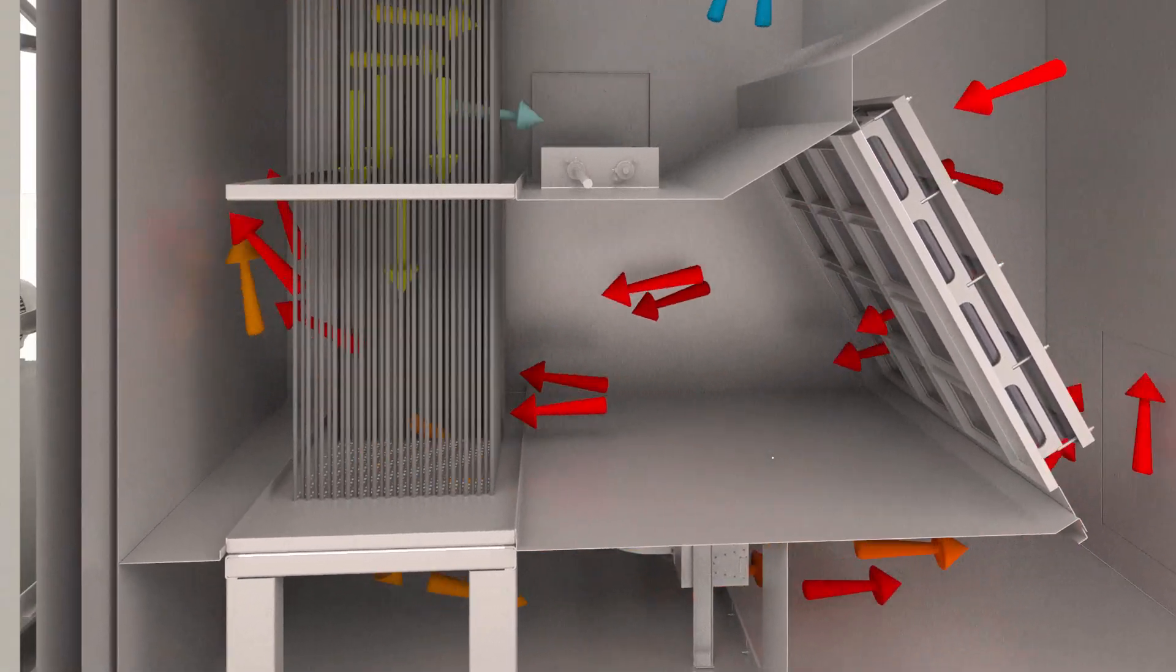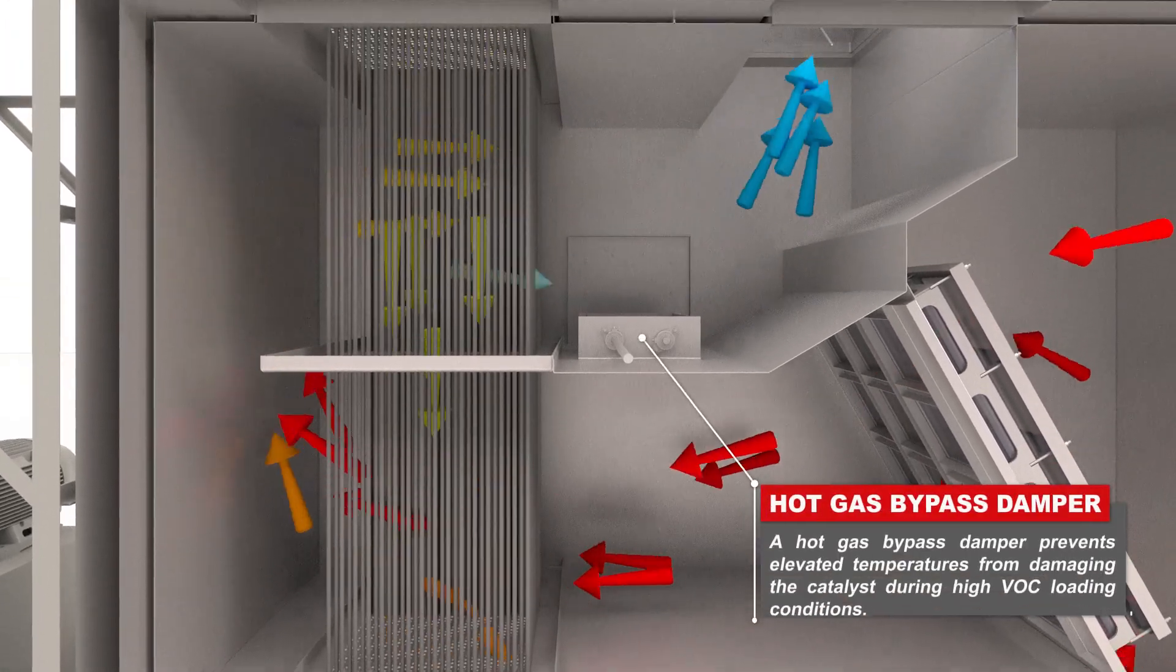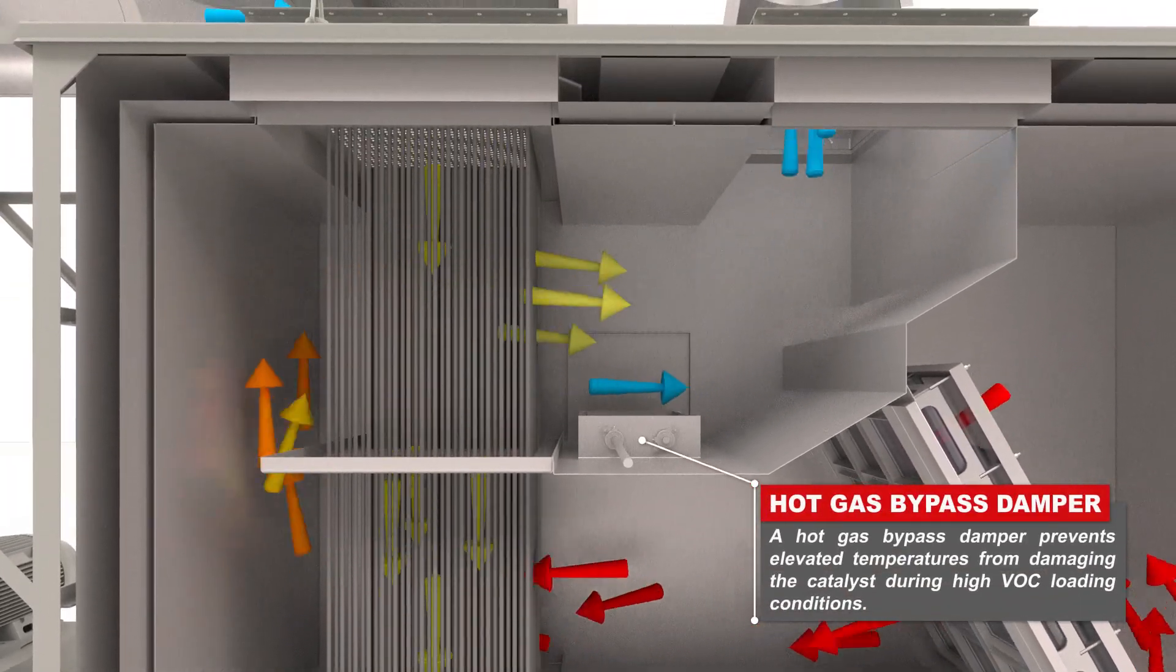The hot, purified air then passes through the opposite side of the heat exchanger and transfers thermal energy via the heat exchanger to preheat the incoming air.